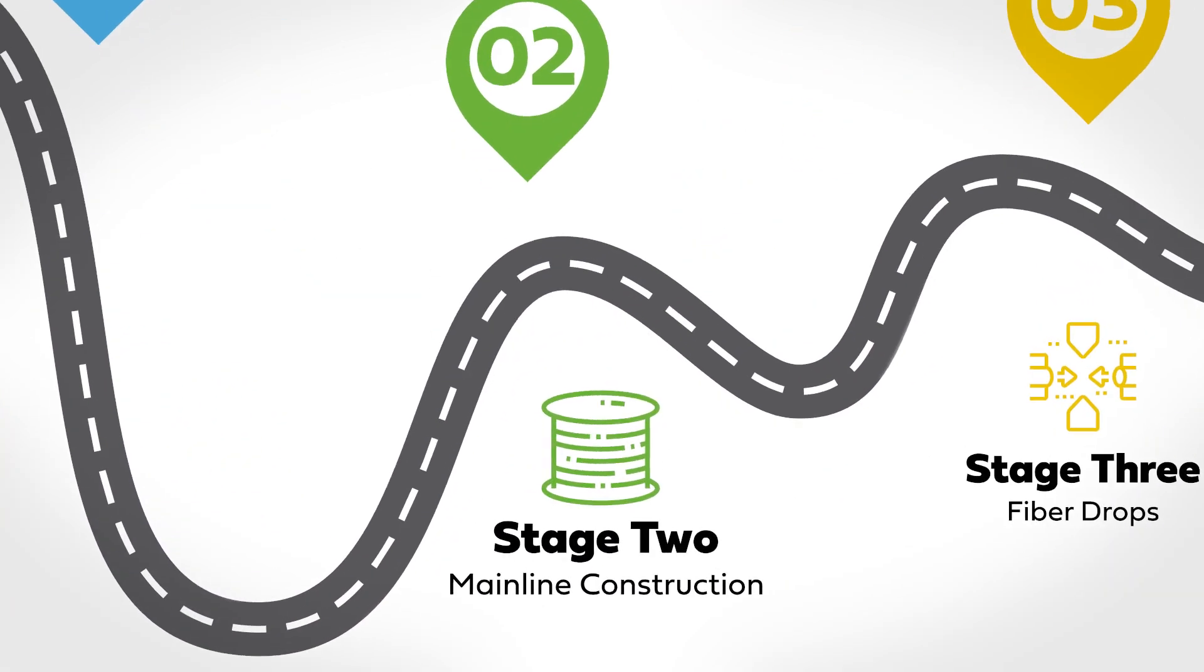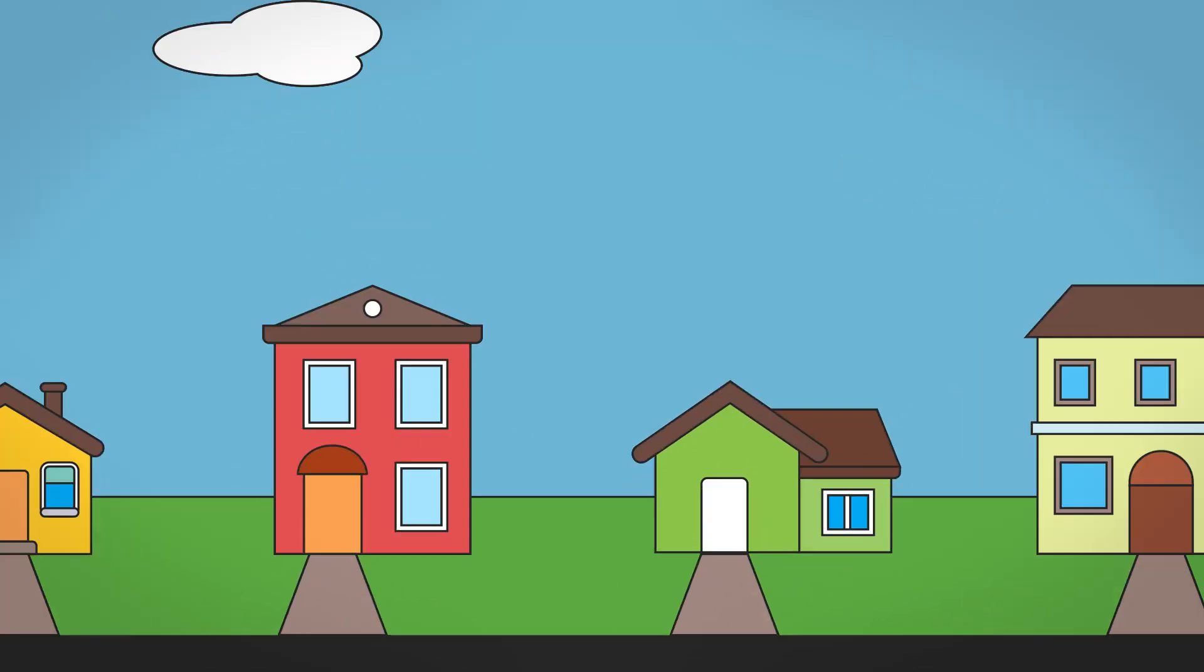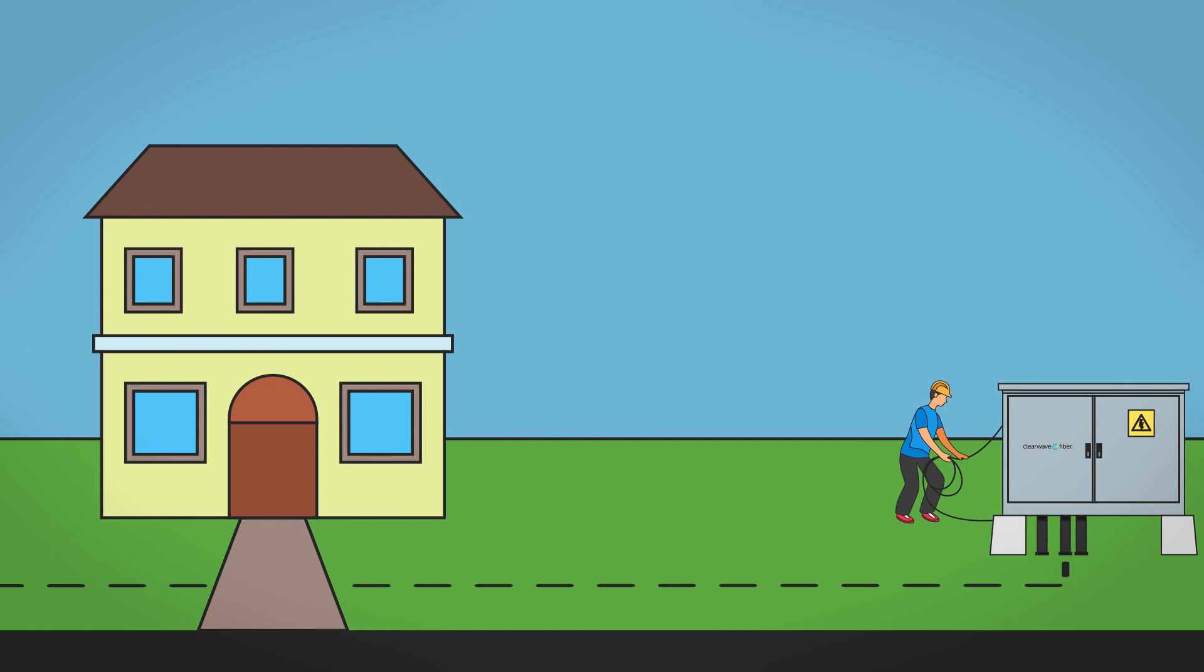Stage two is mainline construction. It takes one to two months to bury fiber optic cables along public rights-of-way, like streets and sidewalks.